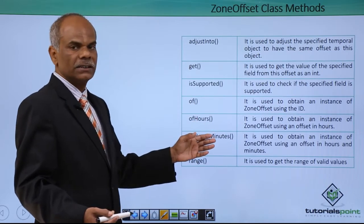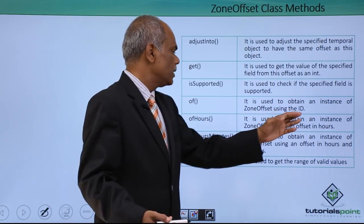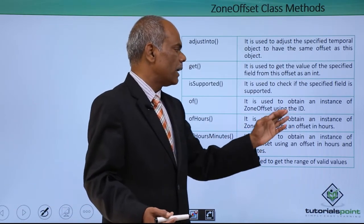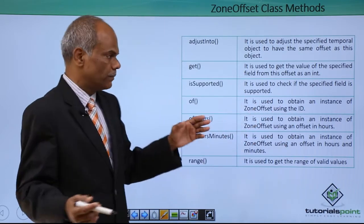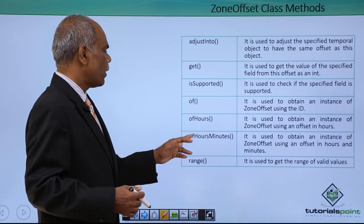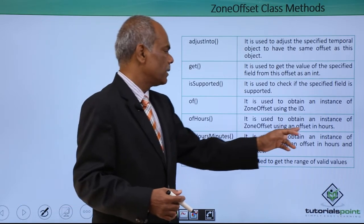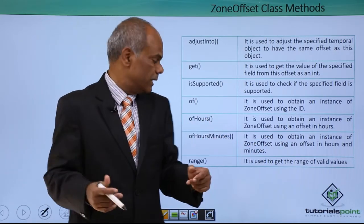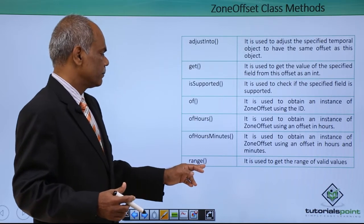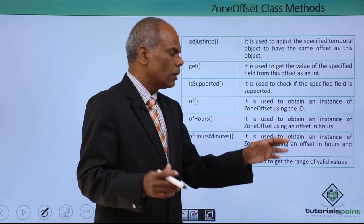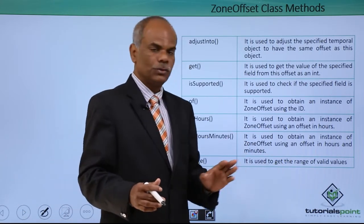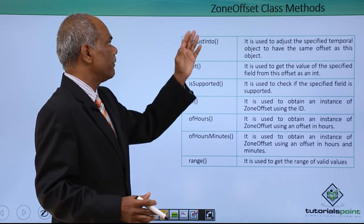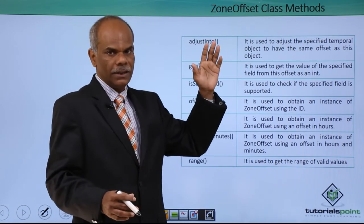Of hours is used to obtain the instance of zone offset using an offset in hours. Of hours minutes is used to obtain the instance of zone offset using offset in both hours and minutes. And range is used to get the range of valid values. These are all the methods available to the zone offset class.